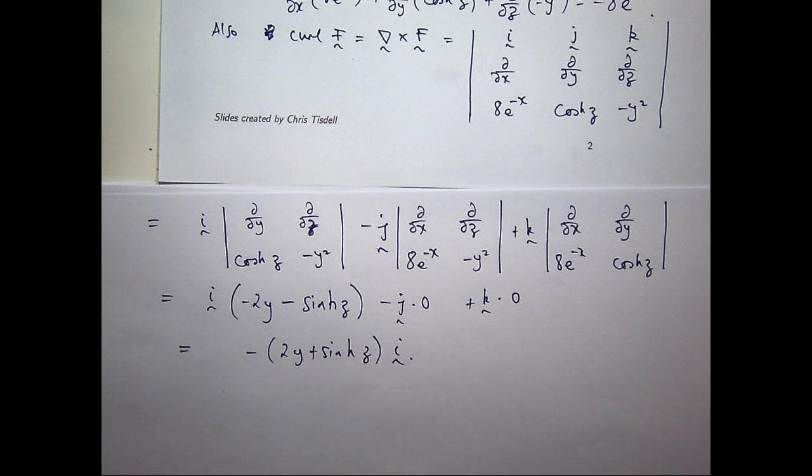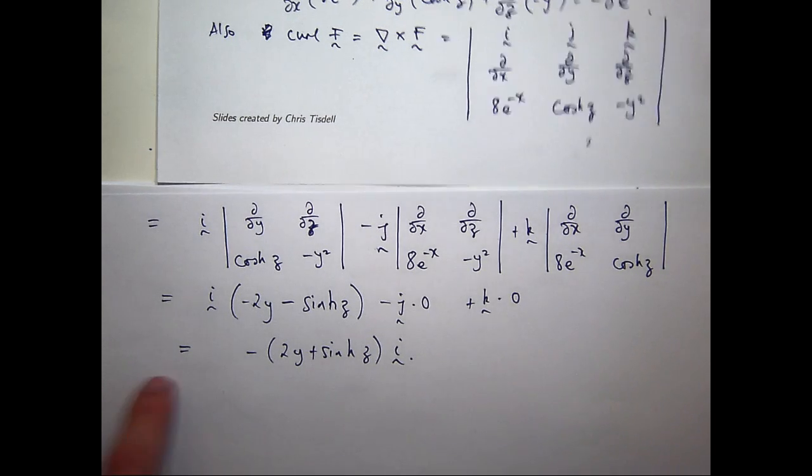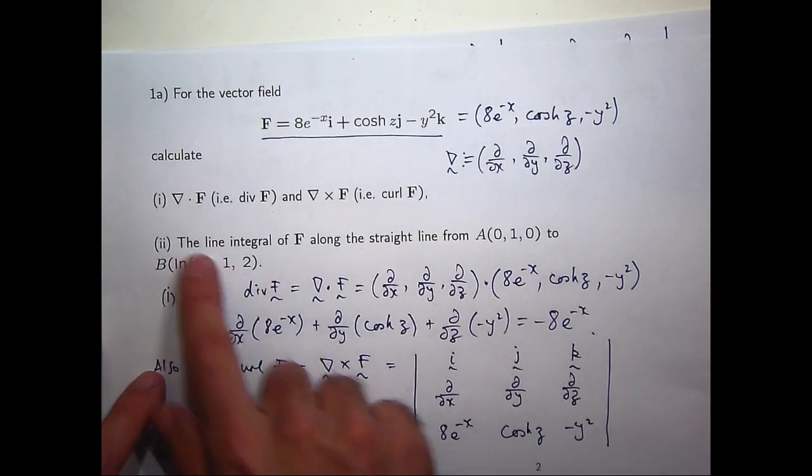So our answer is a vector. And again, loosely speaking, the curl measures the tendency of the vector field to rotate, or swirl, around a point. Okay, well let's have a look at this question now.